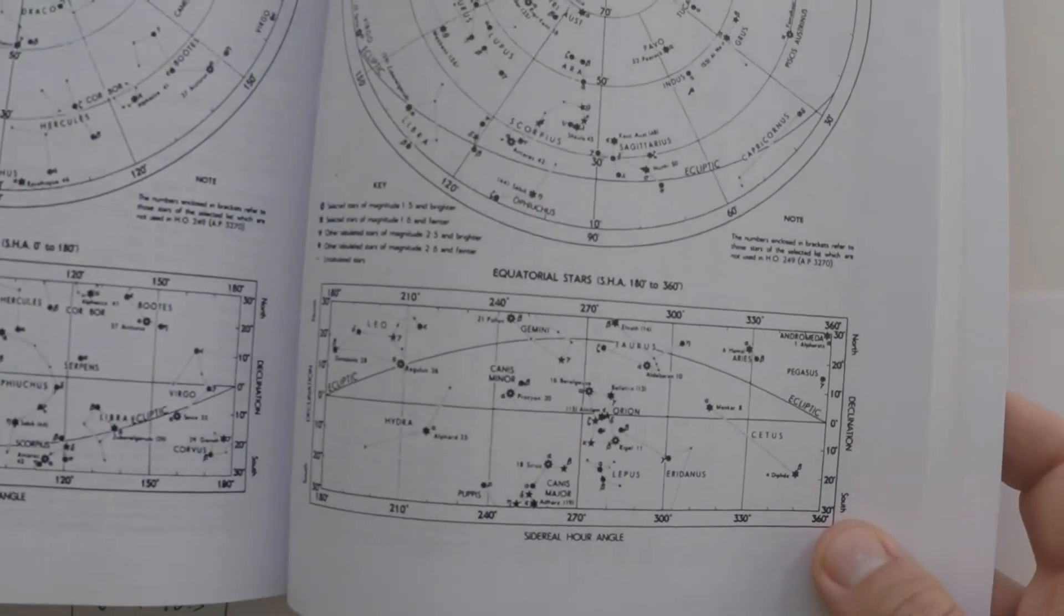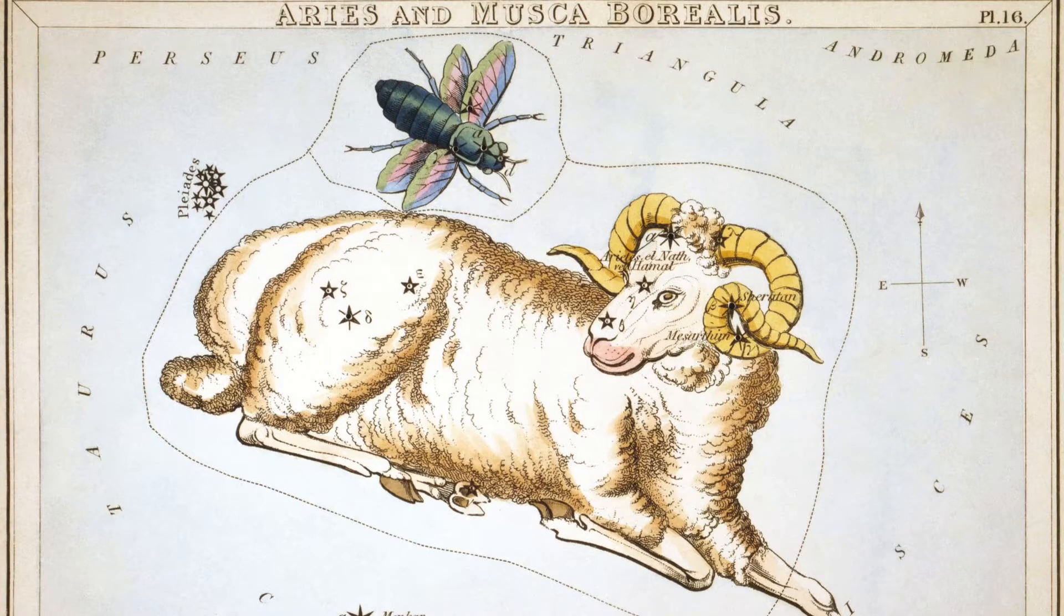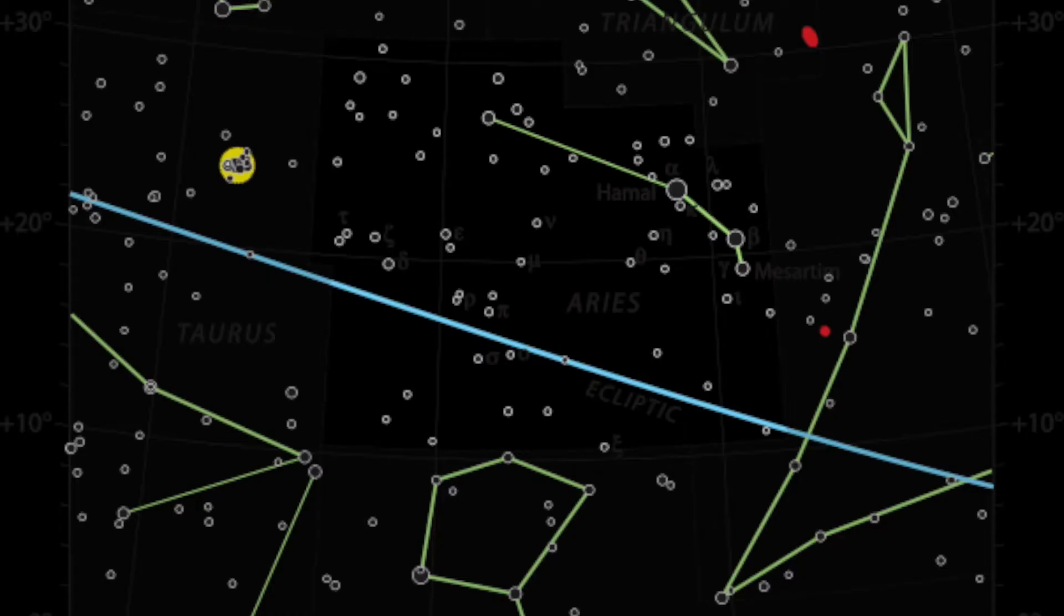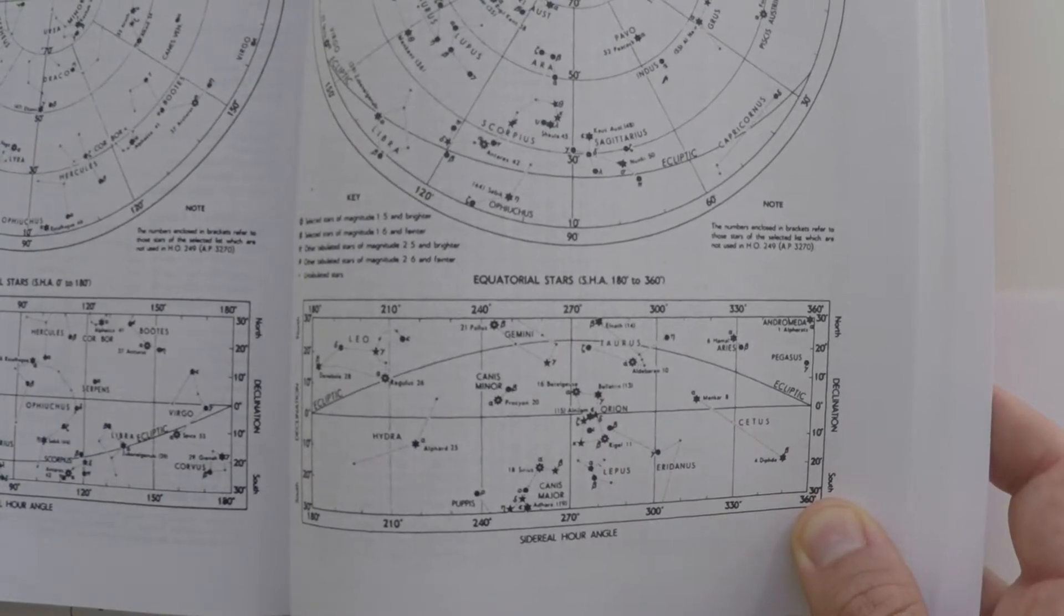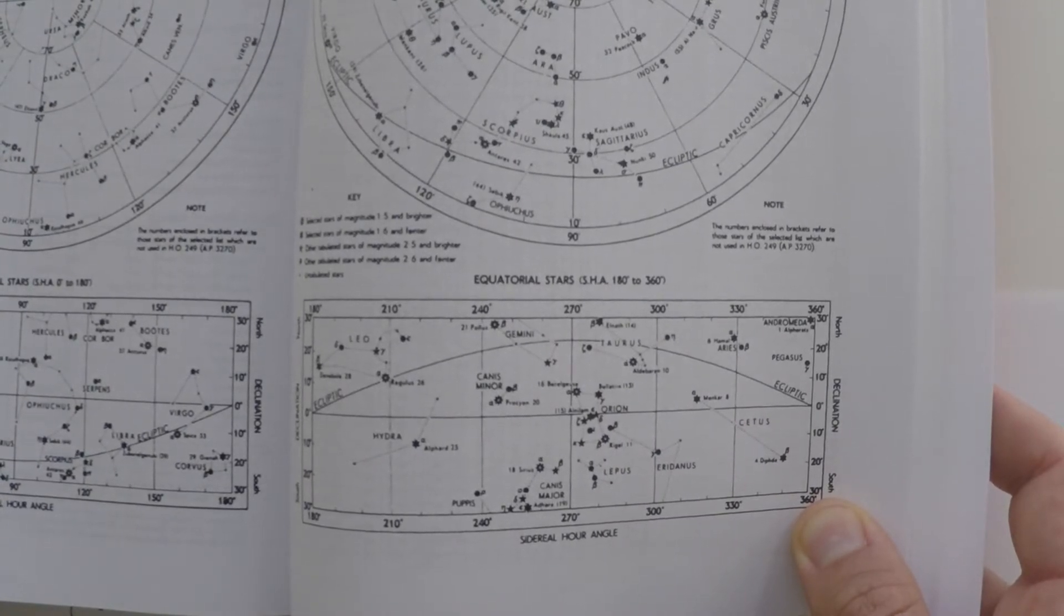When we talk about Aries in the nautical almanac, we're actually talking about the first point of Aries. Aries is a constellation right near the celestial equator. You can think of it as the prime meridian of the sky, like the Greenwich of the night sky. We use the first point of Aries as a marker to help solve other navigational problems.